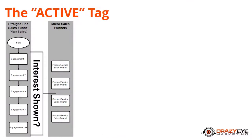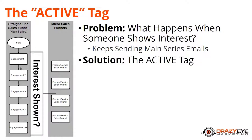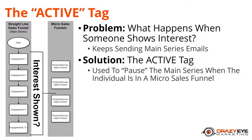In this video we're going to discuss the active tag. When following the interest-driven sales funnel strategy, we're sending correspondence through the main series to gauge subscriber interest, and when interest is shown, we place them into a micro sales funnel. The problem is: if somebody is in the main series and triggers a micro sales funnel, we don't want the main series to keep sending emails while they're also receiving micro sales funnel emails — we don't want to send three, four, five emails a day and also distract them from the micro sales funnel content.